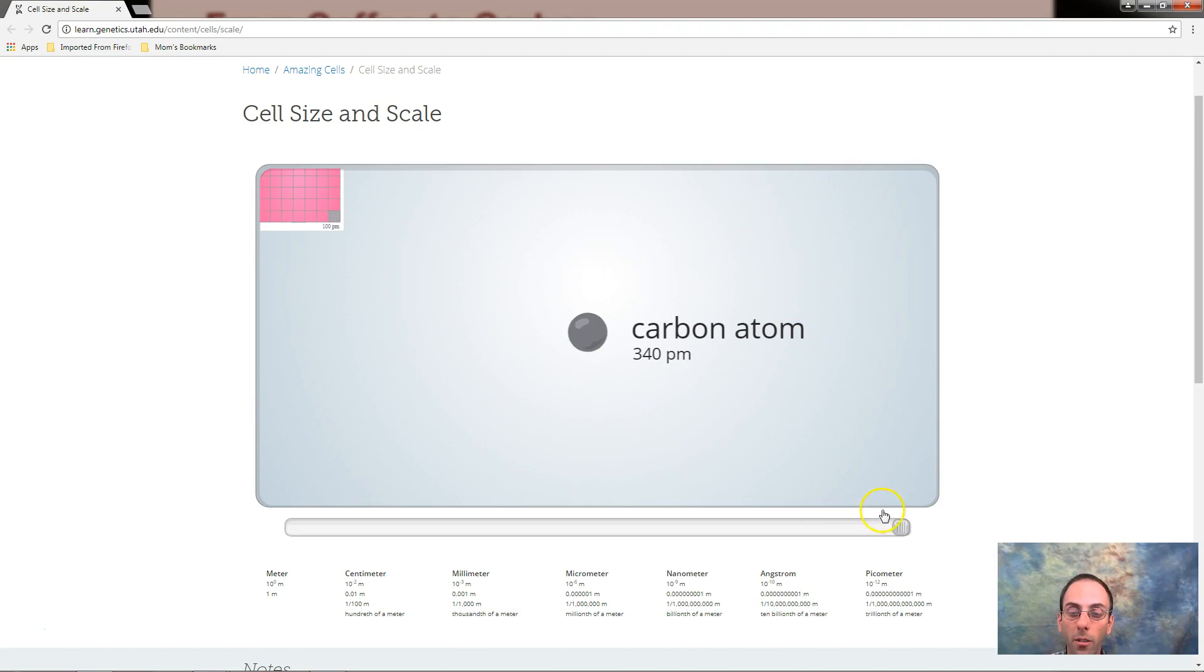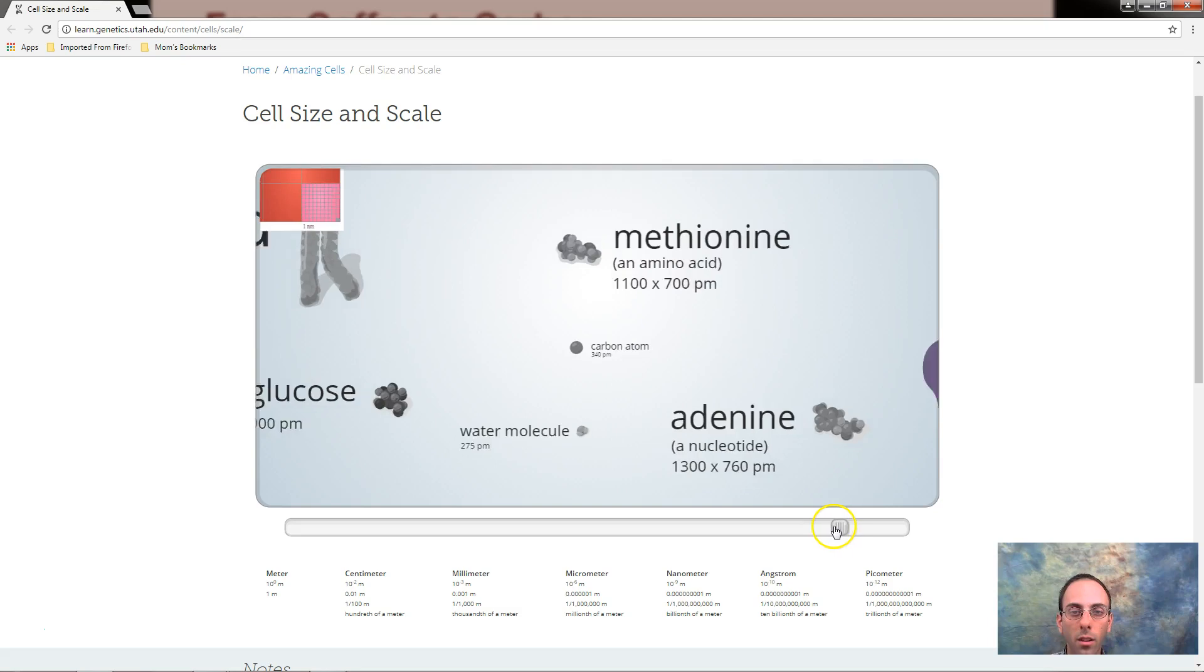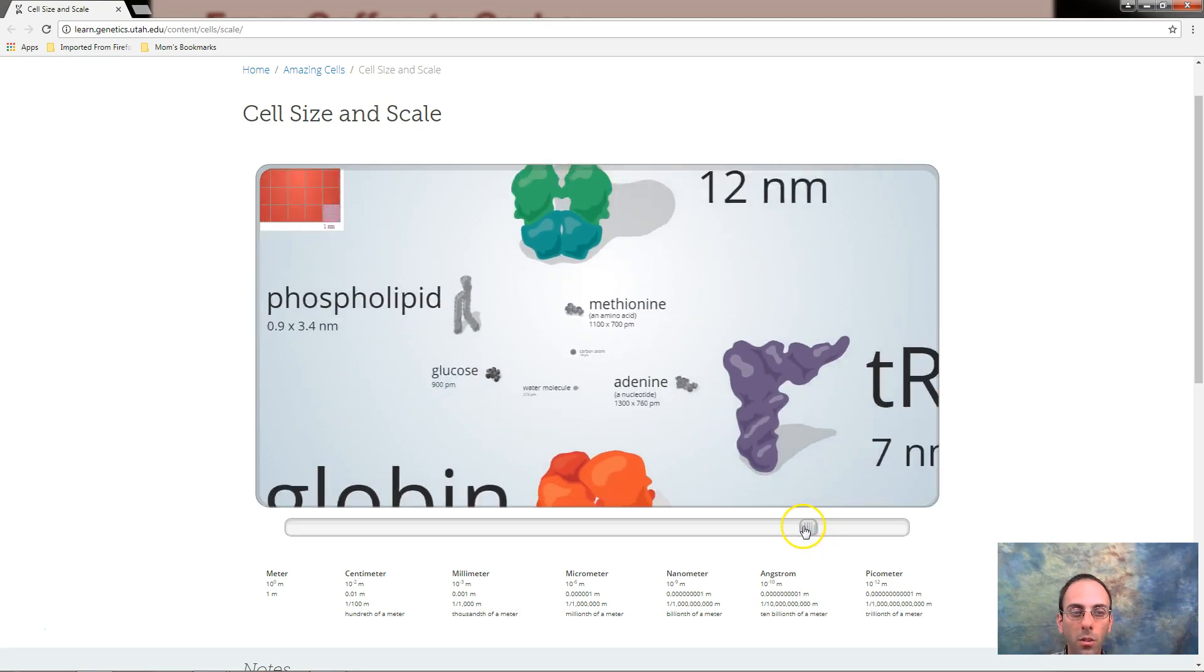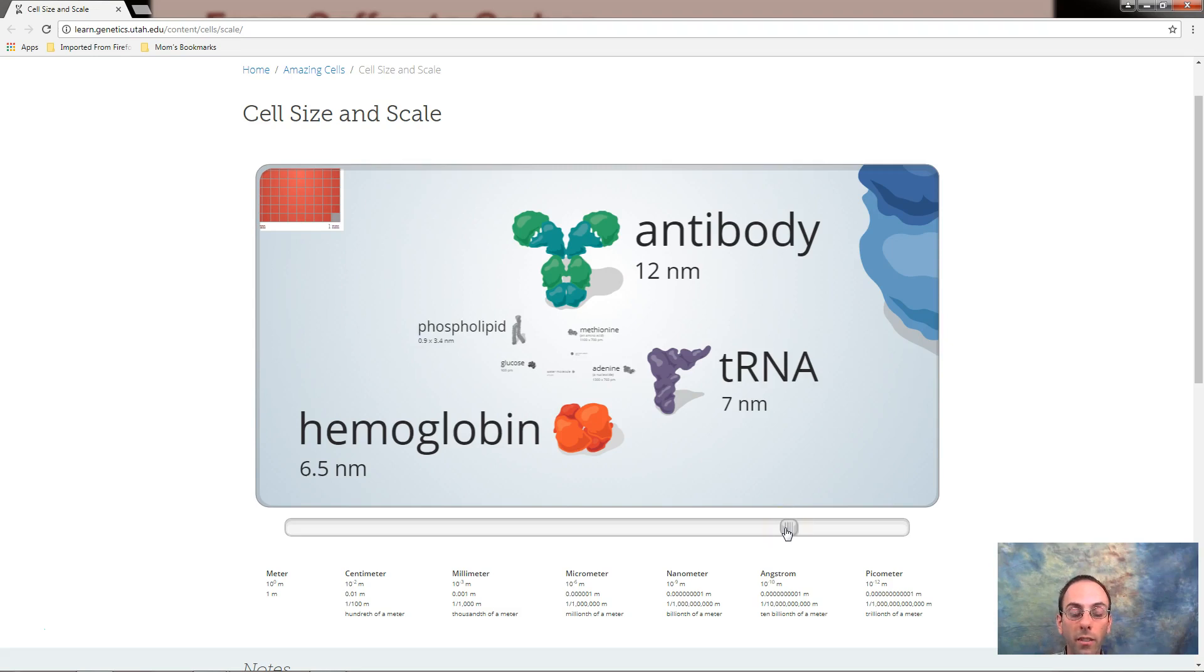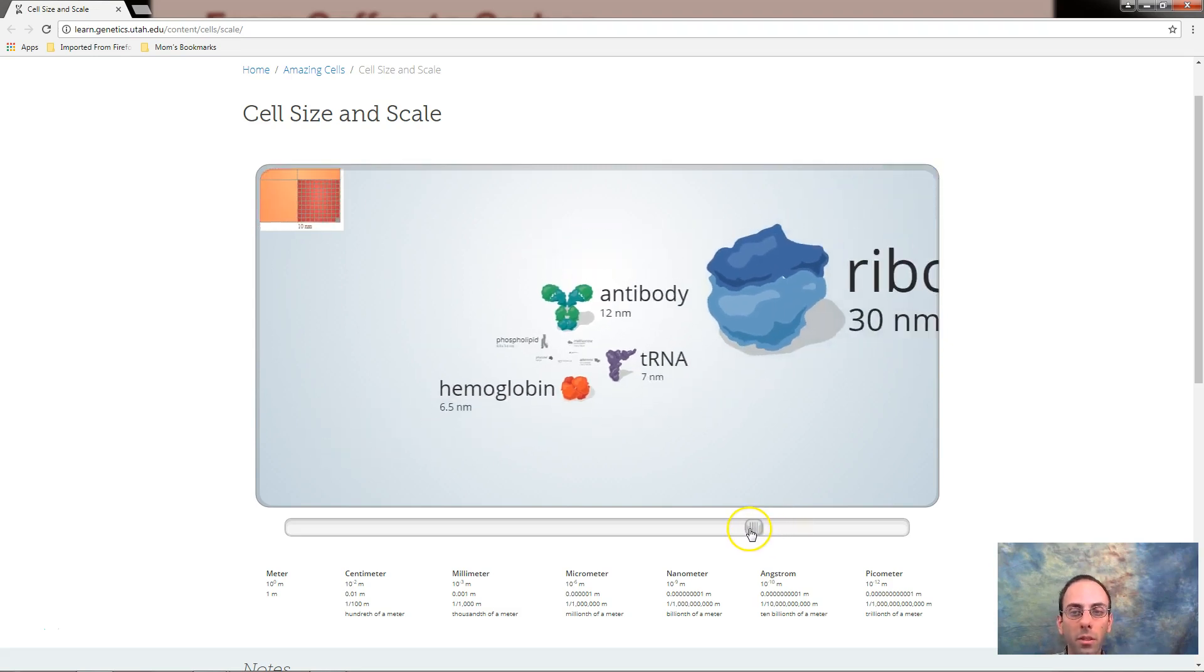I can zoom all the way back out. Kind of a cool kind of trip going from carbon atoms to the amino acids to the glucose to the phospholipids to the tRNA. How big the antibody looks right now and the hemoglobin. Well size is a relative thing.